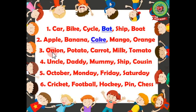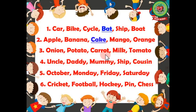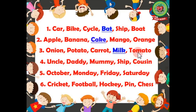Number three: onion, potato, carrot, milk, tomato. Underline the odd noun. The answer is 'milk'. Onion, potato, carrot, and tomato are all names of vegetables, but milk is a drink, so it is odd here. Our answer is 'milk'.